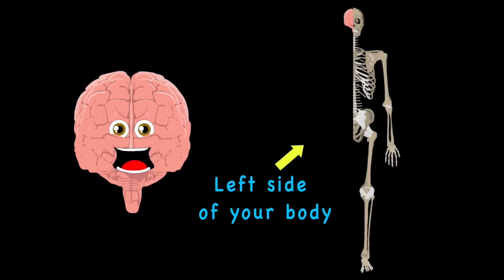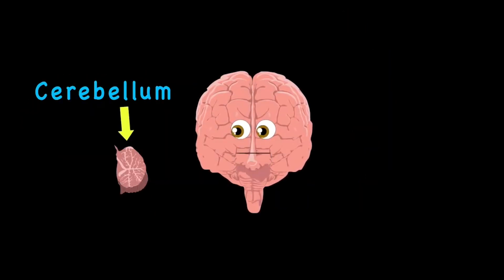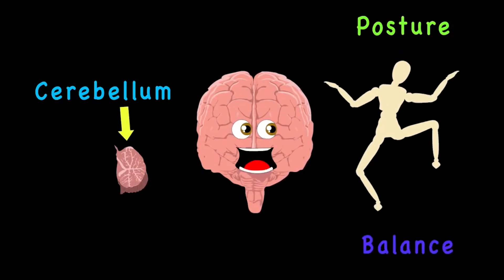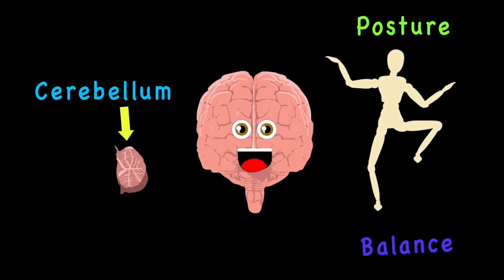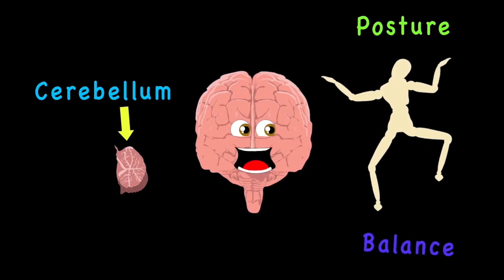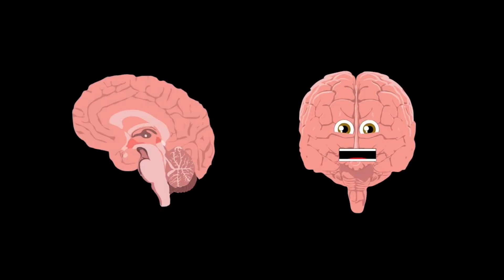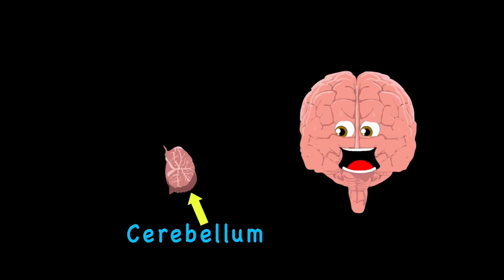The cerebellum controls your posture and your balance. The coordination of your movement is also its talent. It's located in the lower back of your brain. It is rounded in structure as I've gone on to explain.